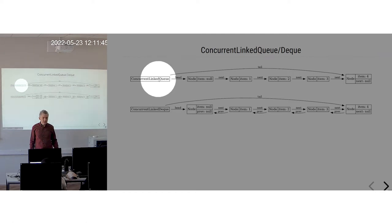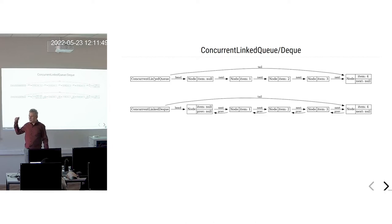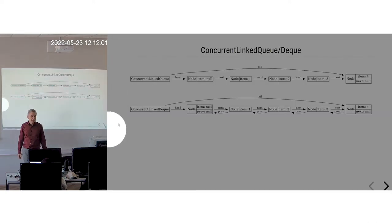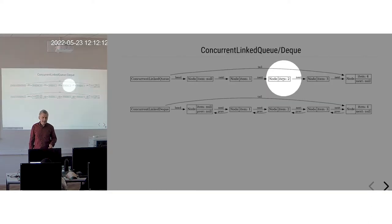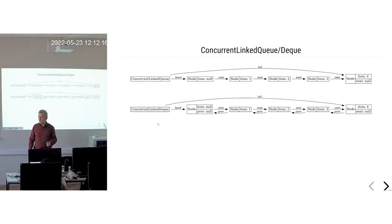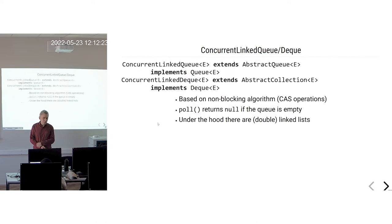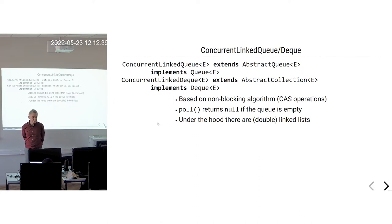For a queue, you add elements from one side and remove from another. A deque can work both as a queue and stack — you can add and remove elements from head and tail, achieved using a doubly linked list. The trick here is that inside they use non-blocking algorithms with CAS operations, so the implementation is quite complex. But you can just use it and have a concurrent queue that can be concurrently modified by many simultaneous threads very performantly.